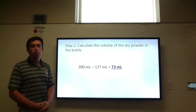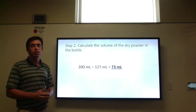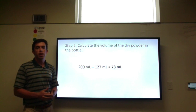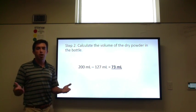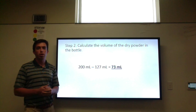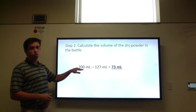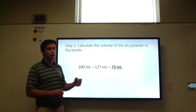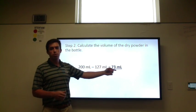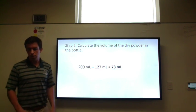Step two: we want to calculate the volume of the dry powder. We only added 127 milliliters of water to the bottle, yet we got a total volume of 200 milliliters — that means the dry powder has some volume. We take the total volume of 200 milliliters and subtract the water added, giving us 73 milliliters, which is the volume of that dry powder.